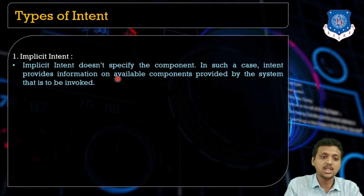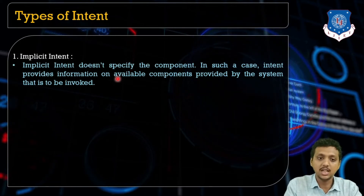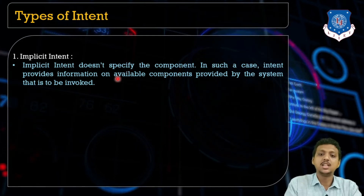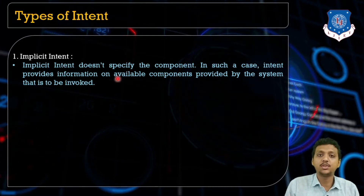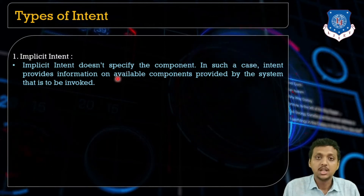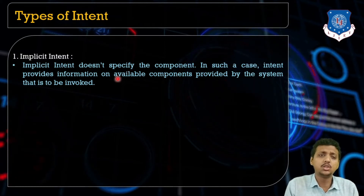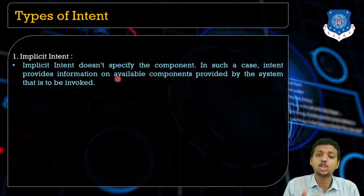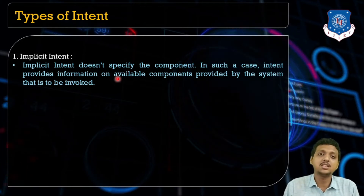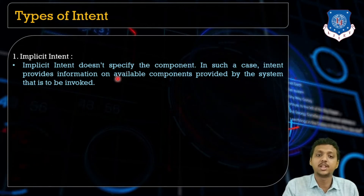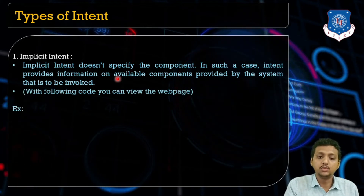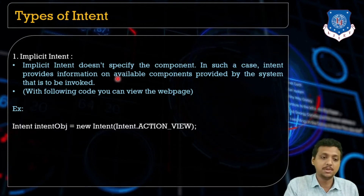There are two types of intent. Number one is implicit intent, which does not specify the component. In such cases, the intent provides information on available components provided by the system — the system itself suggests and runs the appropriate component. With the following code you can view a web page; this is an example of implicit intent.